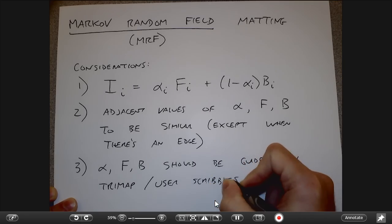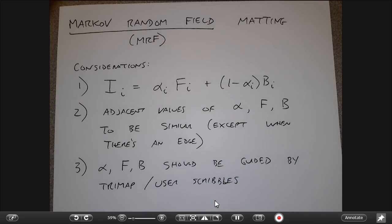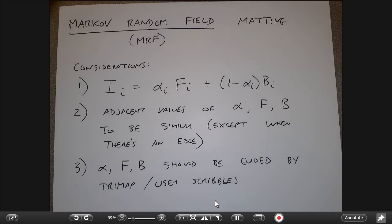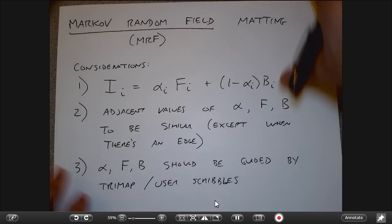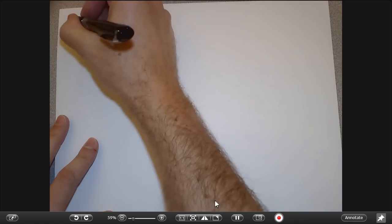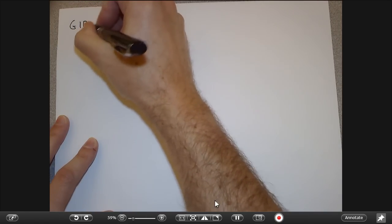The third consideration is that alpha, F, and B should be guided by the trimap or by user scribbles. The user gives some input saying, 'I think this is the foreground, this is the background — you figure out the middle ground where the alpha values are a fraction.' What we're going to do today is set up what's called an energy function, or more specifically what's called a Gibbs energy.